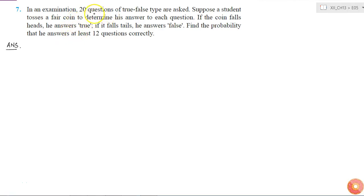In this question, we are given that 20 questions of true or false type are asked, and a student tosses a fair coin to determine his answer. If the coin falls heads, his answer is true, and if it falls tails, he answers false. We have to find the probability that he answers at least 12 questions correctly.